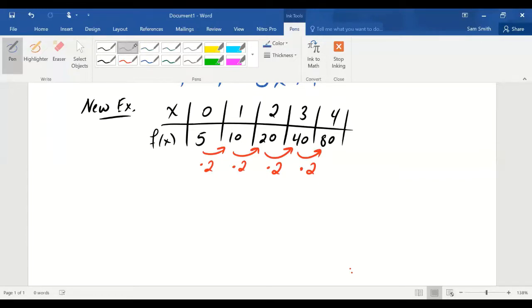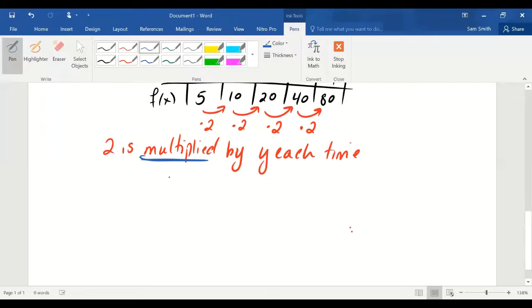So, since 2 is multiplied by y each time, because it's a consistency in terms of multiplication, that tells you that the function is exponential. That the function has the general form, a number a in front, a number b, and that b is being raised to the input x.